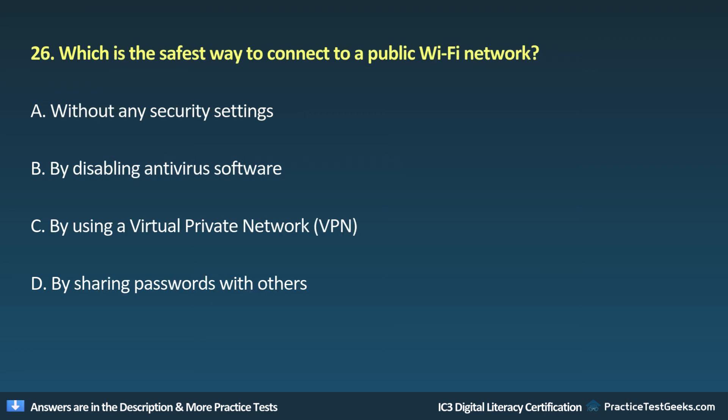Question 26: Which is the safest way to connect to a public Wi-Fi network? A. Without any security settings. B. By disabling antivirus software. C. By using a Virtual Private Network (VPN). D. By sharing passwords with others.